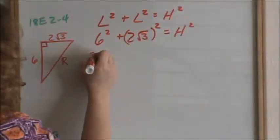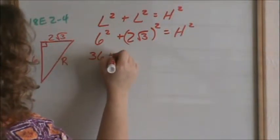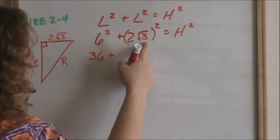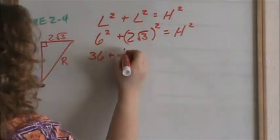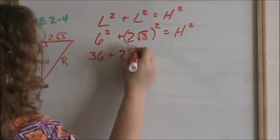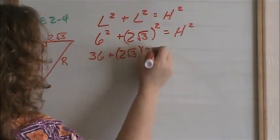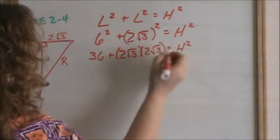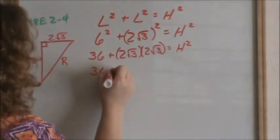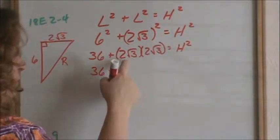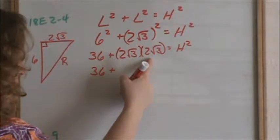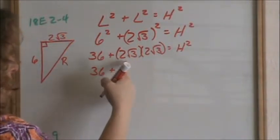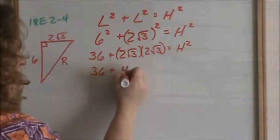6 squared is 36. Now, 2 square root of 3 squared means 2 times the square root of 3, times 2 times the square root of 3. Going to your rules of radicals and multiplying radicals and numbers: numbers to numbers, radicals to radicals. With that, 2 times 2 is 4.